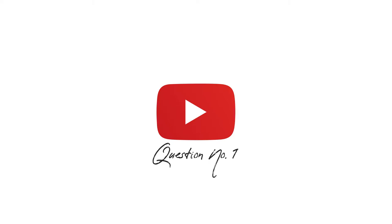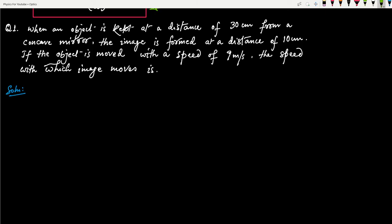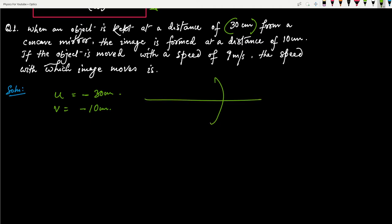Now let's look at a question to solidify the concept. When an object is kept at a distance of 30 centimeters from a concave mirror — so u equals minus 30 centimeters — and the image is formed at a distance of 10 centimeters in front of the mirror, so v equals minus 10 centimeters. If the object is moved at a speed of 9 meters per second, what will be the velocity of the image at that instant? Let me draw the scenario.